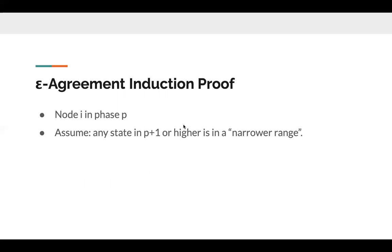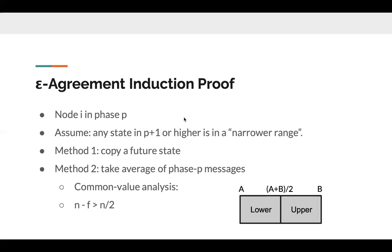Here we only present an intuitive proof of the induction. So consider a node i in phase p, and we assume by induction that any state in phase p plus one or higher is in a narrower range. Our goal is then to show that the new state of node i in phase p plus one or higher is also in that narrower range. By our algorithm, there are two methods for node i to proceed to a higher phase. The first method is copying a future state and jumping to the future phase. In this case, we can simply prove that the new state is also in the narrower range because the state is just a copy of the future state, which is also in the narrow range by our induction assumption.